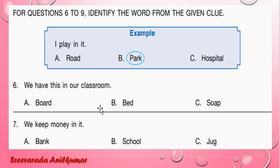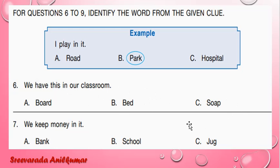Sixth one: Identify the word from the given clue — we have this in our classroom. We do not have a bed or soap in our classroom. We will have a board in our classroom. A is the correct option.